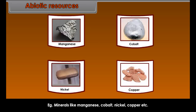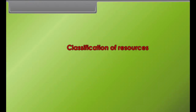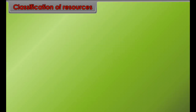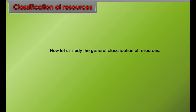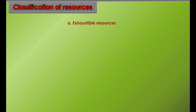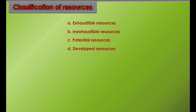There are some abiotic resources which are non-renewable. For example, minerals like manganese, cobalt, nickel, copper, etc. Their formation takes a much longer period of time — more than the lifetime of man — to be renewed.